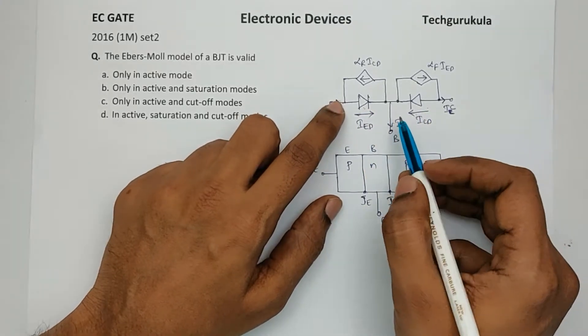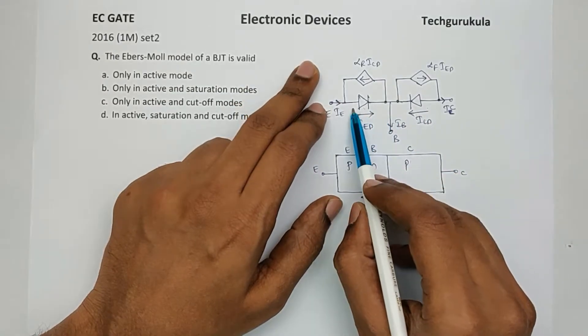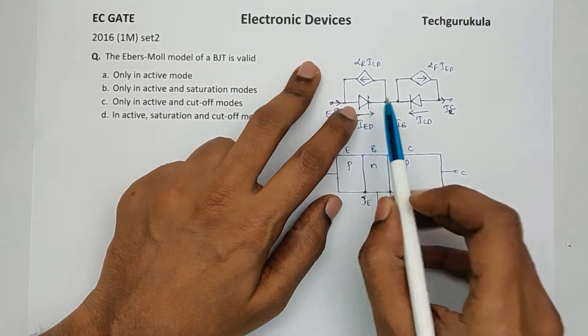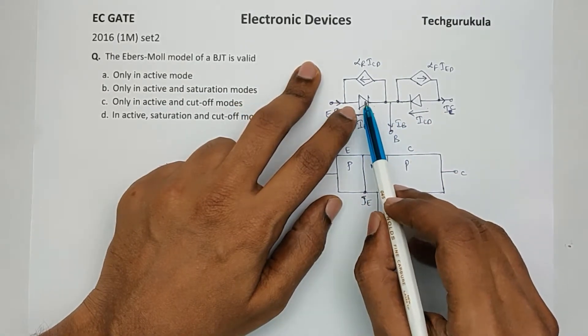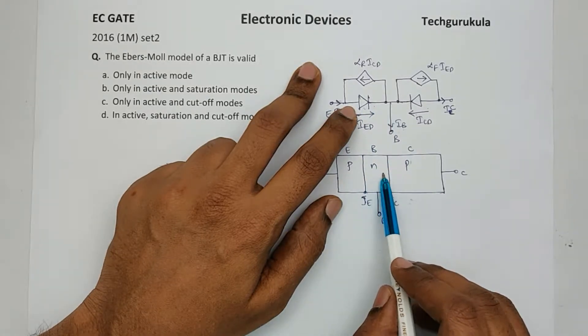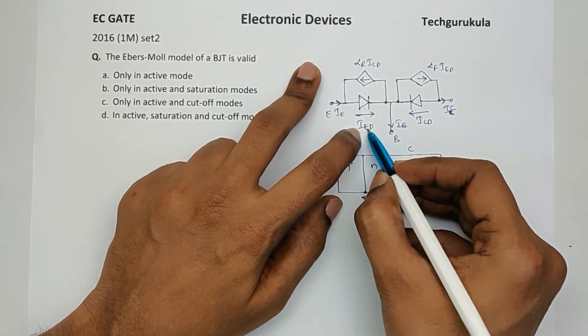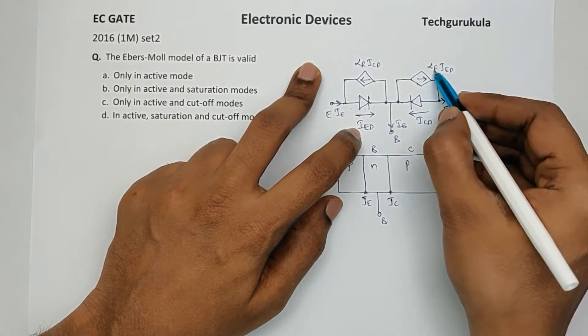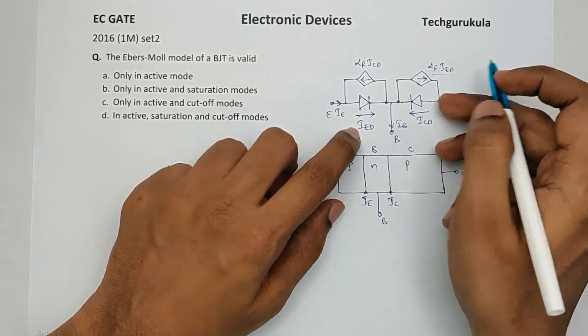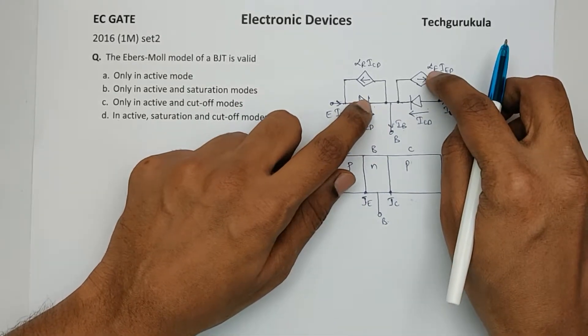So, if you see here, in forward active mode, this diode will be active and because of this diode forward bias, the current actually goes through base and gets collected in the collector. Hence the collector current is dependent on the emitter diode current that is modeled here with alpha F times IED. These two will be active in forward active mode.